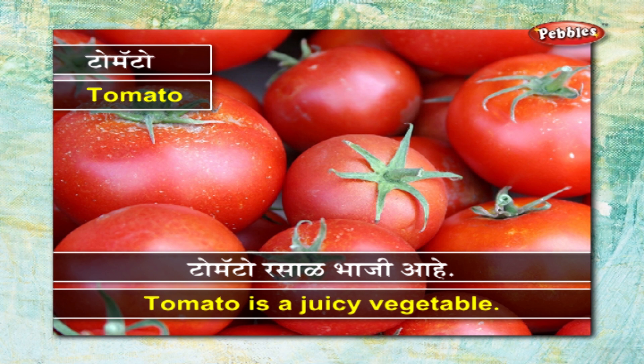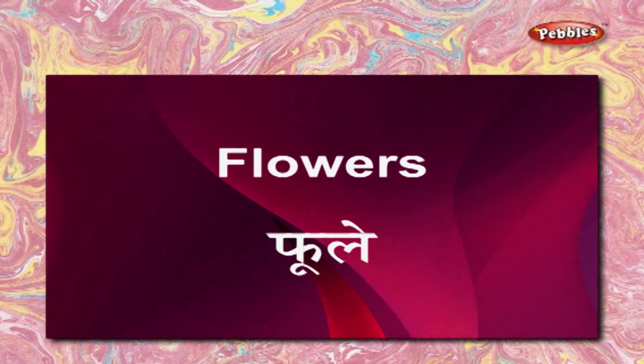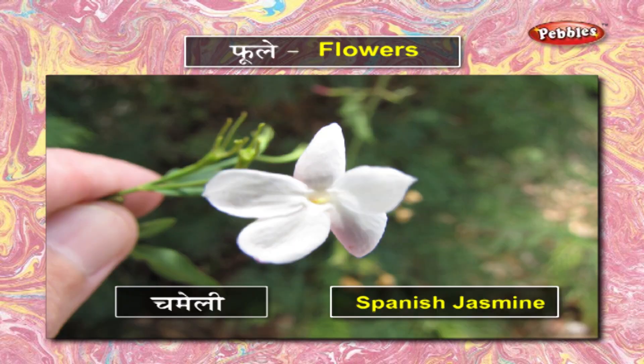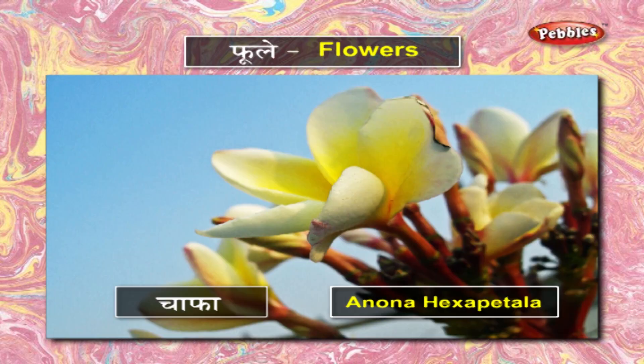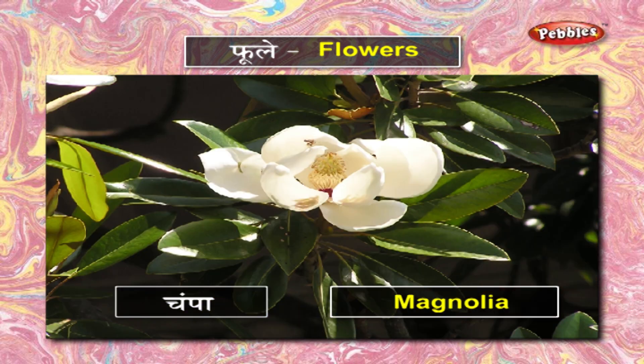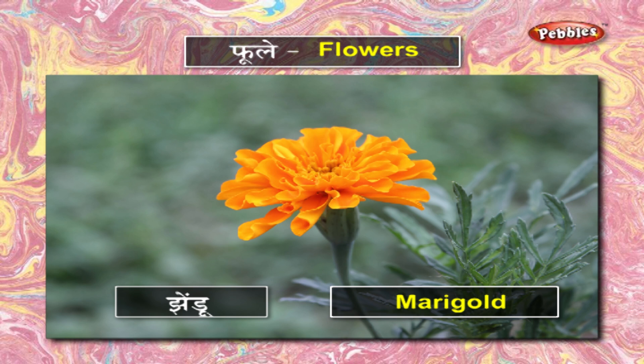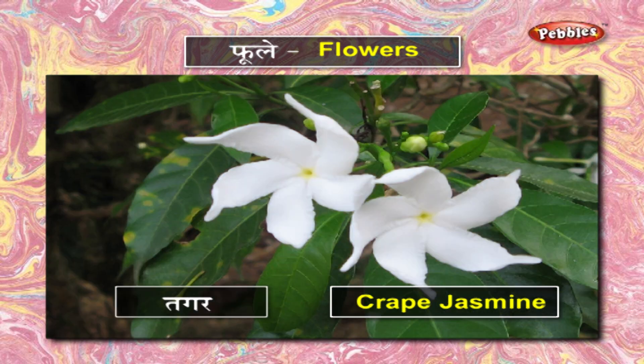Let us learn the names of some flowers. फुले - चमेली. साफा. चंपा. जेंडू. तगर.